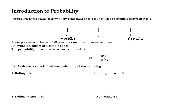If a probability is one-half, we say we have a 50-50 chance, or an equally likely type of outcome between two events. Equally likely — like flipping a coin, it's equally likely that it lands on heads and that it lands on tails.